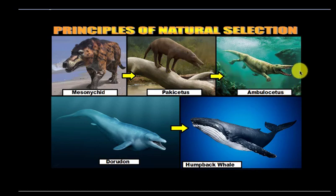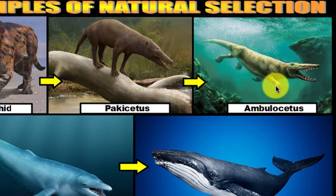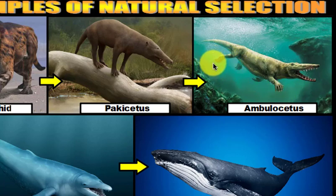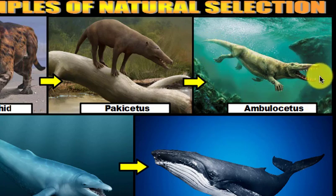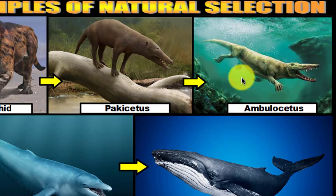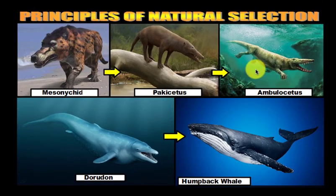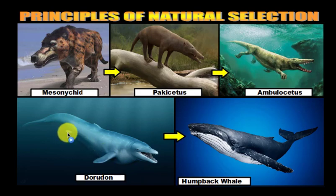When we get to Ambulocetus, the walking whale that swims, the legs are much shorter and the feet are now webbed. That webbing is obviously beneficial for swimming, making it a better swimmer. The long legs have shortened because if you're spending more time in the water, you don't need as much leg strength to support you. Ambulocetus can come out of the water, but it's pretty clumsy — like watching an alligator or crocodile walking on land. Then in Dorudon, the front legs have turned into flippers and the back legs are just little nubs — practically no leg left. If you're living in the water, there's no need for legs to support you.